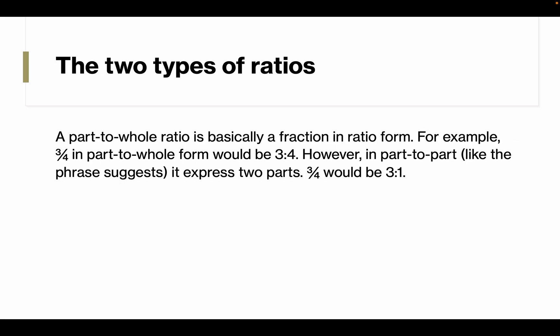The two types of ratios: A part-to-whole ratio is basically a fraction in a ratio form. For example, three-fourths in a part-to-whole form would be three is to four. However, in a part-to-part, like the phrase suggests, it expresses two parts. So three-fourths would be three is to one.